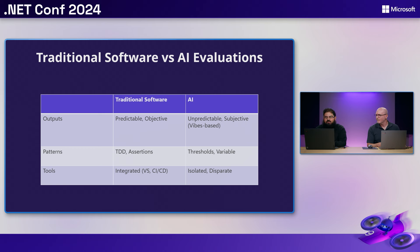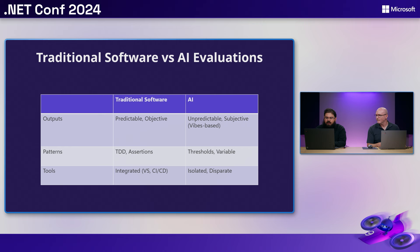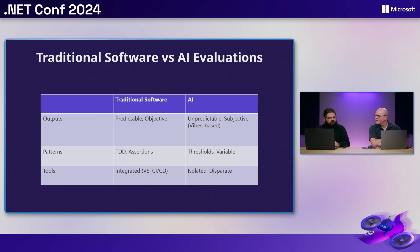Interpreting the output — what 'good' means — can be subjective. You may have heard of 'vibes-based' testing where it's like 'looks good to me,' but what's good to me may not be good to you. That makes it challenging to evaluate AI systems. We also have a long history of established patterns in traditional software like TDD and assertions, but with AI your output isn't predictable, so you need to test that quality is within a certain range and place thresholds accordingly.